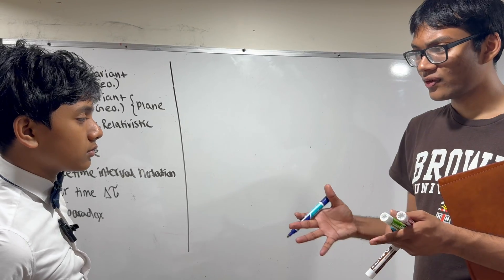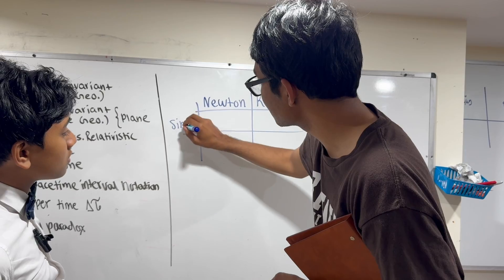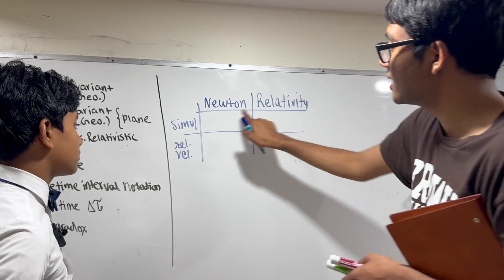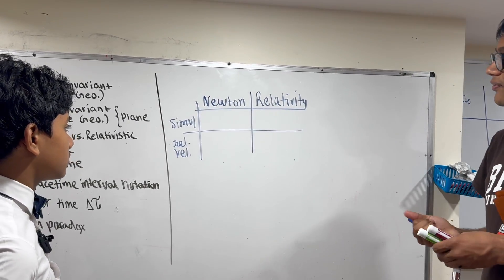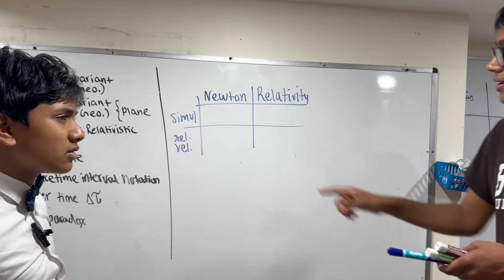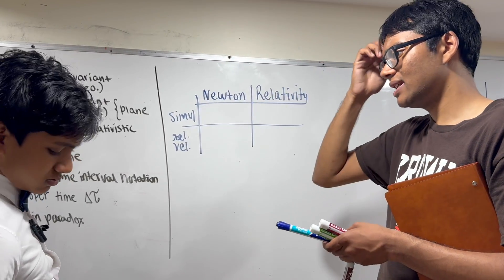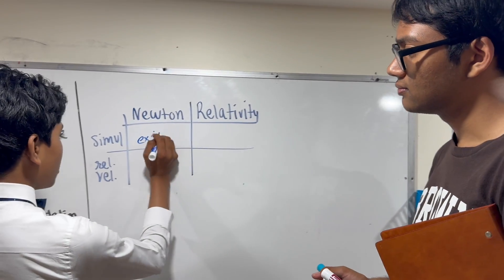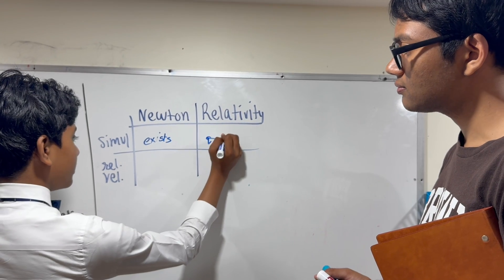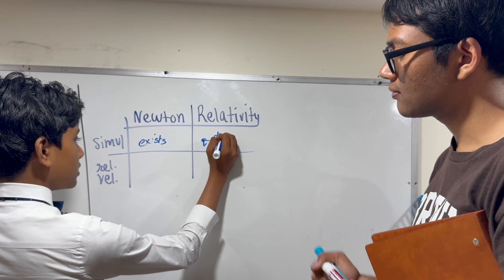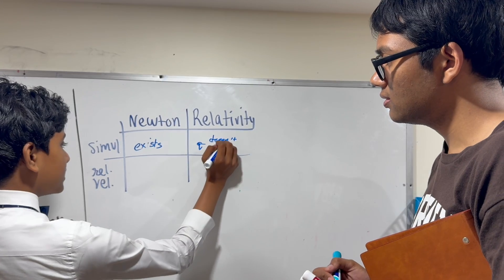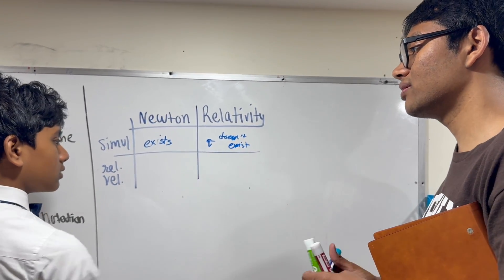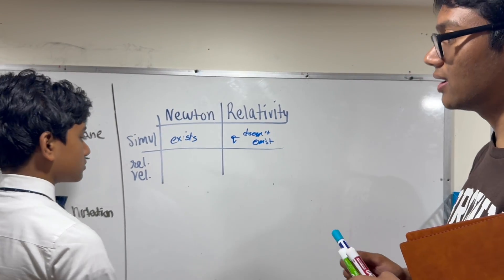Now I'm going to make a table for you to fill out. I'll write simultaneity and relative velocity. Can you fill in this table for me? Compare these two. What can you tell me about simultaneity in Newtonian space-time? Simultaneity definitely exists in Newtonian space-time, while it's questionable in relativity or doesn't exist. Can two events be objectively simultaneous in Newtonian relativity? Yes.